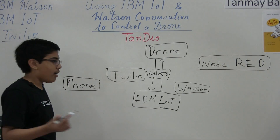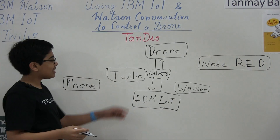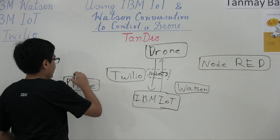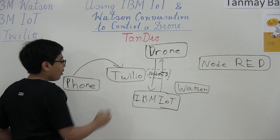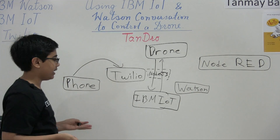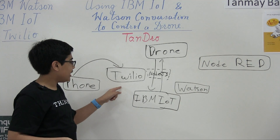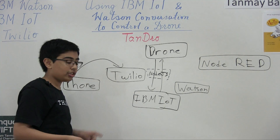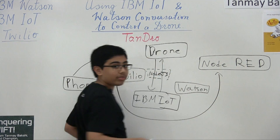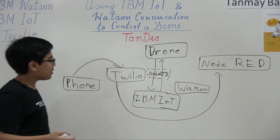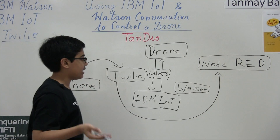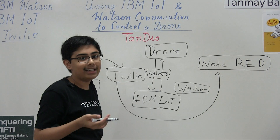We also have the phone. Once this connection is established, the phone connects to Twilio — we send a text message to Twilio, and from Twilio it goes to Node Red. Node Red can now handle everything and send us back a text message.